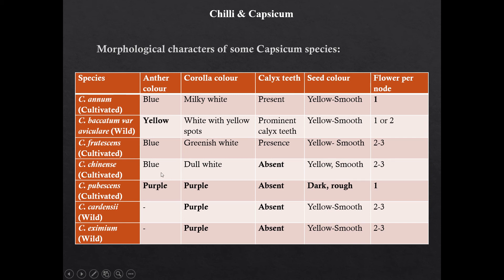Capsicum frutescens, which is a cultivated species, has anther color blue, flower color greenish white, presence of calyx teeth, and yellow smooth seed. Capsicum chinense has blue anther with dull white flower and absence of calyx teeth, and yellow smooth seed. Capsicum pubescens has purple flower and purple anther color, calyx teeth are absent, and seed color is dark with rough surface. Capsicum cardamomum has purple flower, absence of calyx teeth, and yellow smooth seed. Capsicum eximium has purple flower, absence of calyx teeth, and yellow smooth seed with smooth surface.